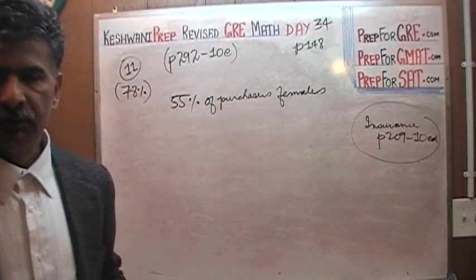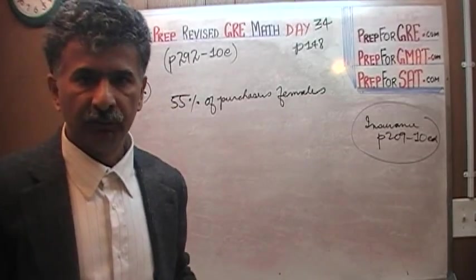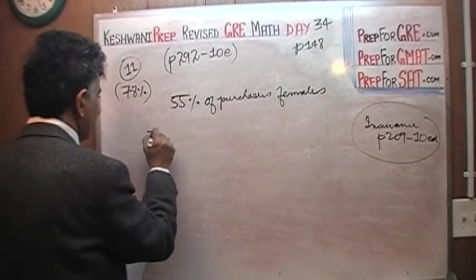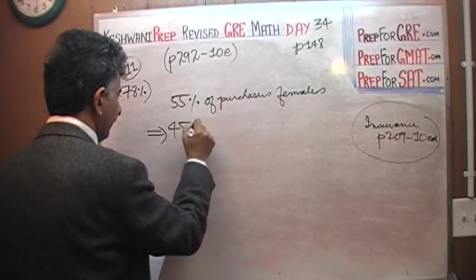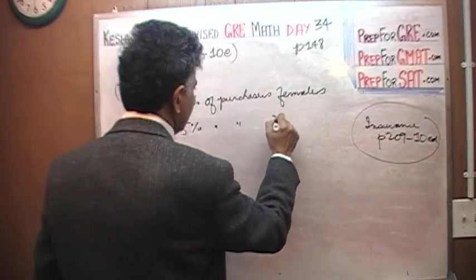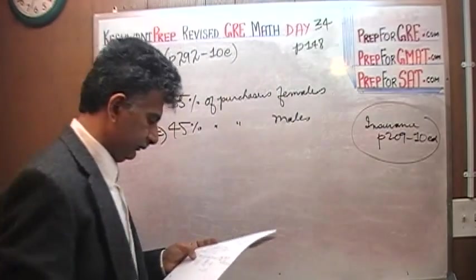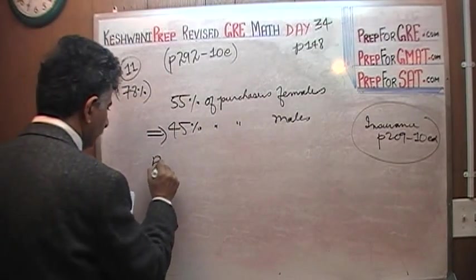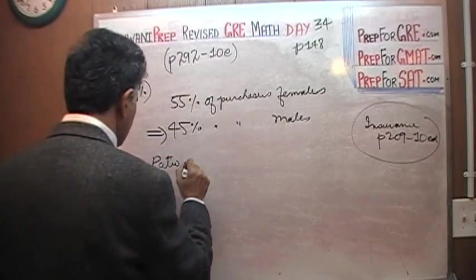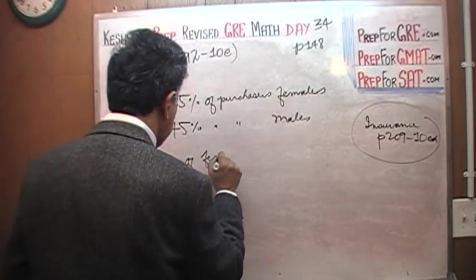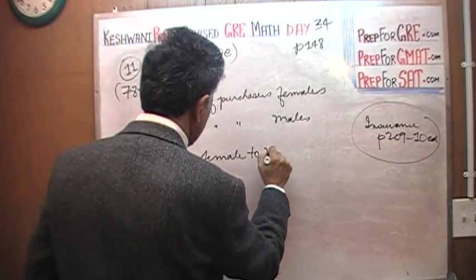We are told that 55% of purchasers were female. If 55% of purchasers were female, then it stands to reason that the remaining 45% of the purchasers must be males. And the question simply is, what is the ratio of female to male?